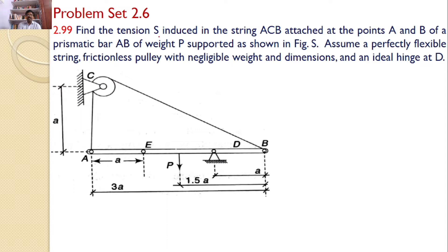Find the tension S induced in the string ACB attached at the points A and B of a prismatic bar AB of weight P, supported as shown in the figure. Assume a perfectly flexible string, frictionless pulley with negligible weight, dimensions, and the ideal hinge at D.